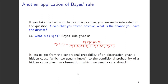We apply Bayes' rule. Probability of D given T can be written as probability of T given D multiplied by probability of D, divided by the expanded denominator: probability of T given D times probability of D, plus probability of T given D complement times probability of D complement. This formula lets us get the conditional probability of an observation given the hidden cause, which we usually know, and use it to find the conditional probability of the hidden cause given the observation — that is, whether we have the disease given that the test came out positive.